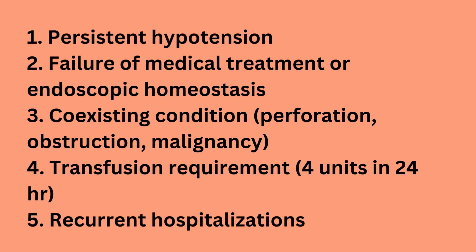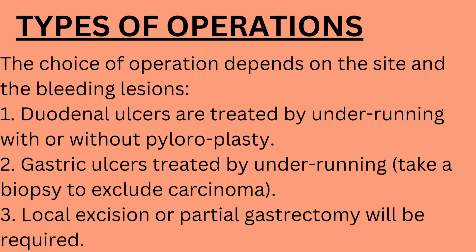Indications for surgery: persistent hypotension; failure of medical treatment or endoscopic hemostasis; coexisting conditions such as perforation, obstruction, or malignancy; transfusion requirement of 4 units in 24 hours; and recurrent hospitalizations. Types of operations depend on the site of the bleeding lesion. Duodenal ulcers are treated by underrunning with or without pyloroplasty. Gastric ulcers are treated by underrunning with a biopsy to exclude carcinoma. Local excision or partial gastrectomy may be required.